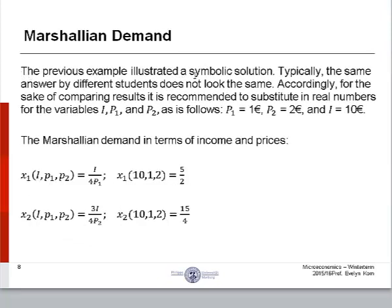The previous example illustrated a symbolic solution. Typically, the same answer by different students does not look the same. Accordingly, for the sake of comparing results, it is recommended to substitute in real numbers for the variables i, p1, and p2, as follows: p1 equals 1 euro, p2 equals 2 euros, and i, income, equals 10 euros.